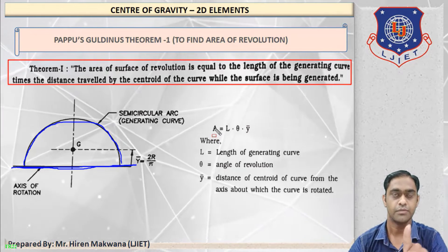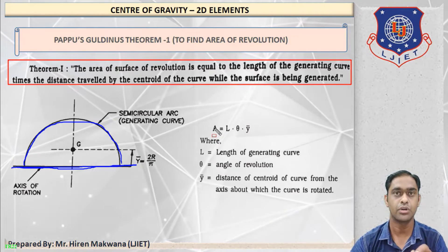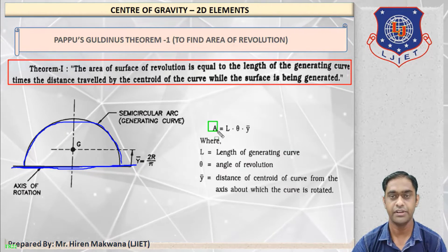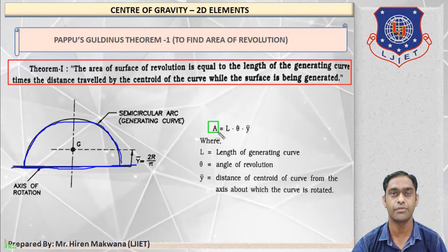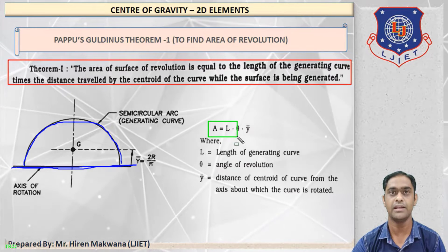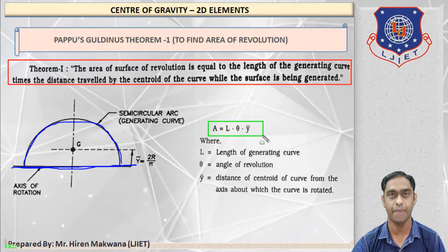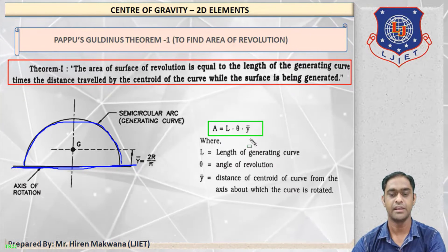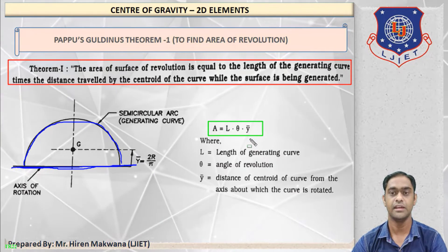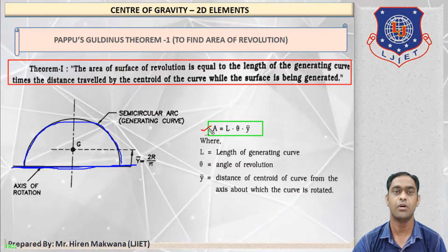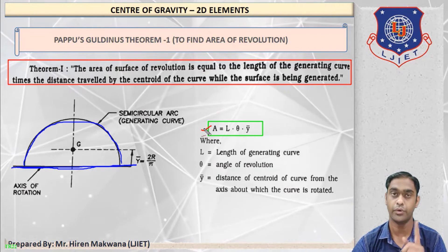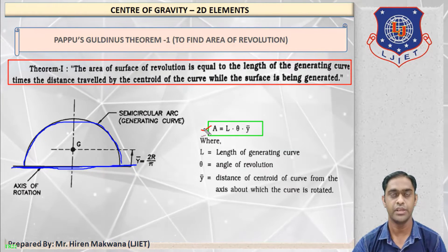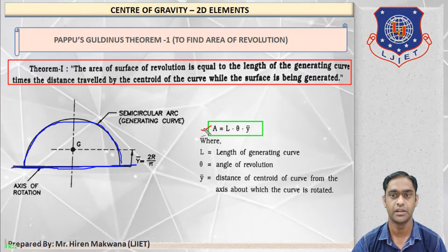The statement is quite tough, so concentrate on the formula first. The area of surface of revolution is equal to L times θ times ȳ. Here, A means the area of the figure going to be generated — in this case, the area of the sphere.